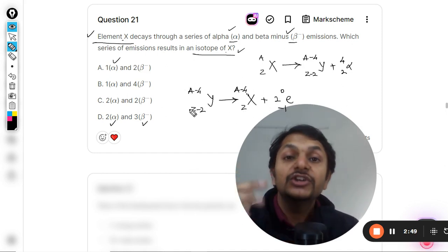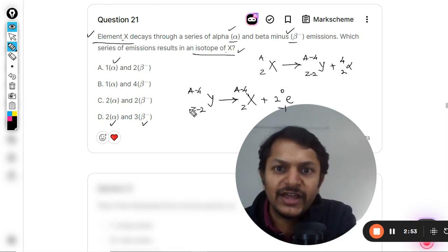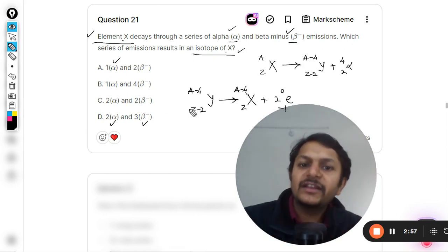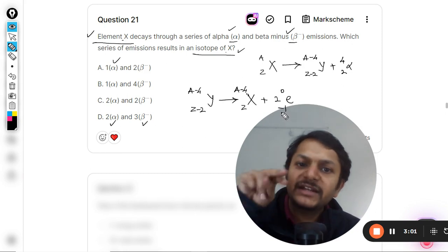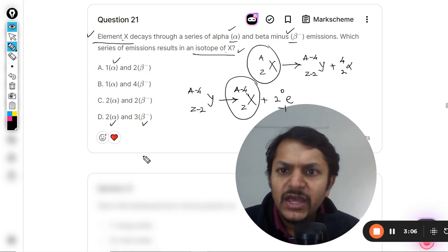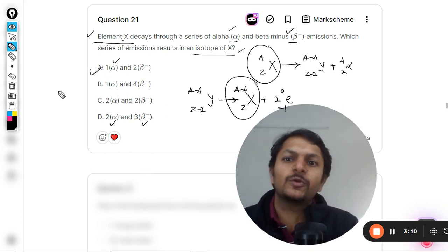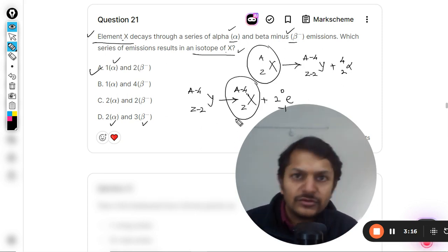Clearly, Z-2+2 equals Z. The atomic number on the left hand side of the reaction is Z-2, and the total atomic number on the right hand side is Z-2 as well. So we are going to get an isotope of X. This means option A is correct: one alpha and two beta minus are required to create the isotope.